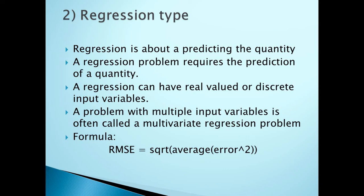For regression problems, you calculate the Root Mean Square Error (RMSE). For example, if the true value is 2 and your model predicted 2.2, the error is 0.2. If another true value is 2 and the model predicted 2.3, the error is 0.3. To calculate RMSE, square each error, take the average of the squared errors, then take the square root of that average. This gives you the RMSE value.